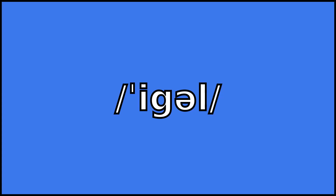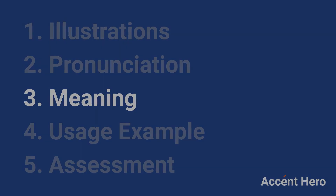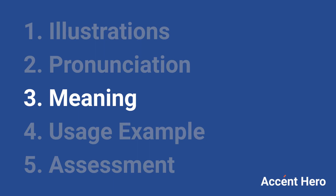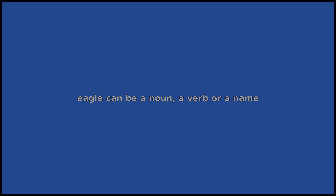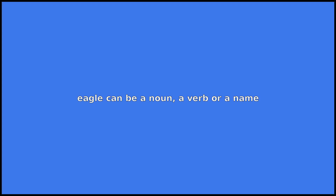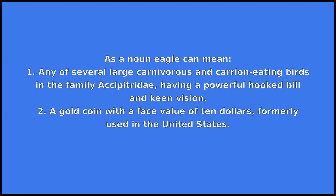Eagle can be a noun, a verb, or a name. As a noun, eagle can mean: 1. Any of several large carnivorous and carrion-eating birds in the family Accipitridae, having a powerful hooked bill and keen vision.